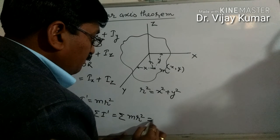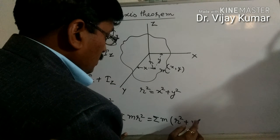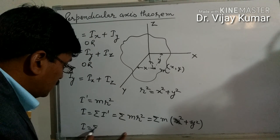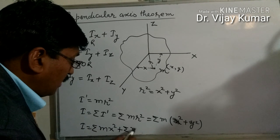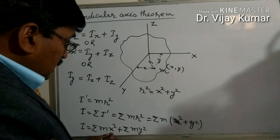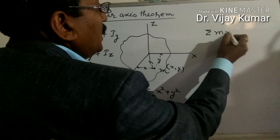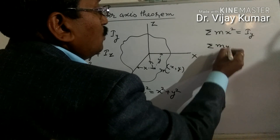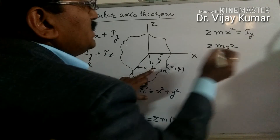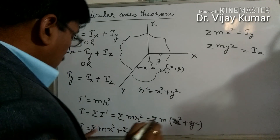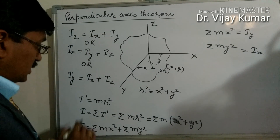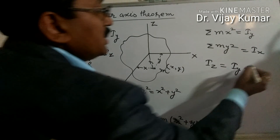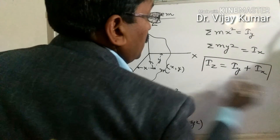Since r-squared equals x-squared plus y-squared, we can write I_z equals sigma m(x-squared plus y-squared), which gives I_z equals sigma m·x-squared plus sigma m·y-squared. Here, x is the distance from the y-axis, so sigma m·x-squared represents the moment of inertia about the y-axis, I_y. And y is the distance from the x-axis, so sigma m·y-squared represents the moment of inertia about the x-axis, I_x. Therefore, I_z equals I_y plus I_x. This is the perpendicular axis theorem.